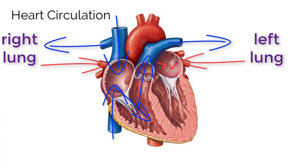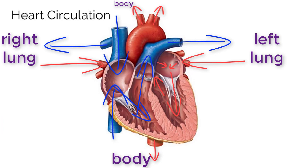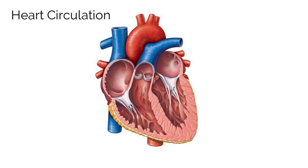The oxygenated blood then returns to the left atrium through the pulmonary veins — this marks the end of pulmonary circulation. Once in the left atrium, blood gets pumped into the left ventricle across the AV valve. When the left ventricle contracts, the blood exits through the semilunar aortic valve to the aorta, where it is pushed to all parts of the body. When it reaches its destination, oxygen is dropped off, the blood becomes deoxygenated, and it returns through the vena cava to the right atrium, starting the cycle over again.